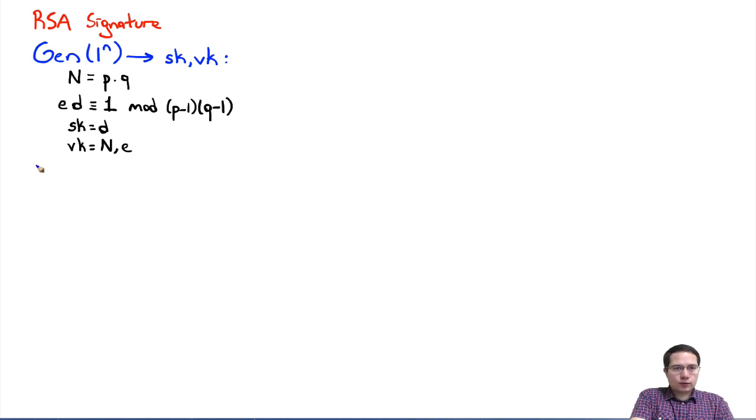Then we had an algorithm for signing messages using the signing key. So it took as input the signing key and the message and produces some signature sigma. It generated sigma simply as follows: it computed the random oracle output on M and then that to the power D, of course modulo N.